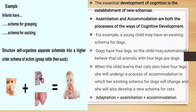For example, when children learn about fruits, they are told that something sweet in taste is a fruit. Later, they are given a bitter fruit and told that is also a fruit. Similarly, a child introduced to the idea that a dog has four legs may later realize that not all four-legged animals are dogs — it could be a cat or a cow. So they change and modify their schema.